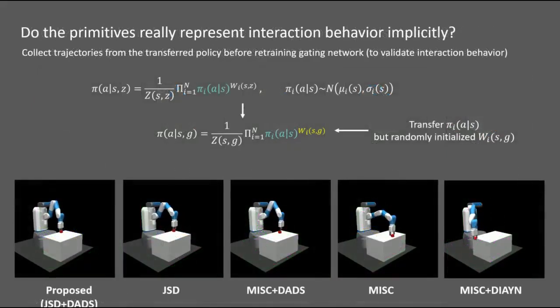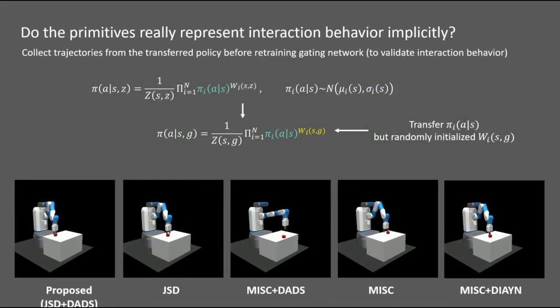To verify whether the transferred primitives really represent the interaction behavior, we collected trajectories from the trained policy before retraining the gating network. The proposed method shows grasping behavior, while others are limited to reaching near the object or hitting the object away rather than interacting.